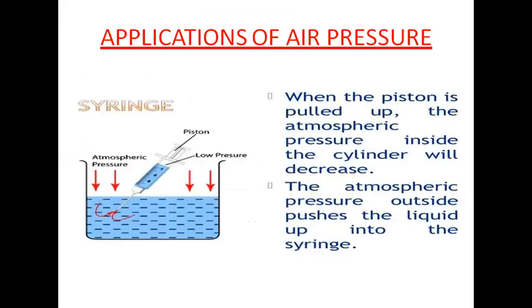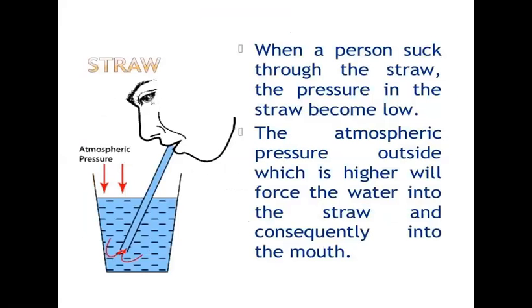Now let's discuss applications of air pressure. The first application is a syringe. When the piston of the syringe is pulled up, the atmospheric pressure inside the cylinder decreases, and the atmospheric pressure outside pushes the liquid up into the syringe — that is how the syringe fills with liquid. The second example is a straw. When a person sucks through a straw, the pressure in the straw becomes low and the higher atmospheric pressure outside forces the liquid into the straw and consequently into the mouth.